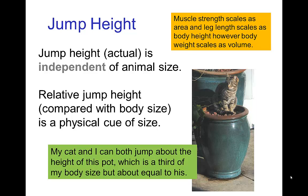You see in this photo, this is my cat. My cat can easily jump on top of that pot, which is about the same height that I can jump. So my cat and I can each jump roughly the same height, and a mouse can jump about that height as well.